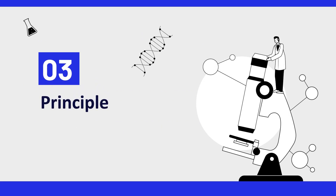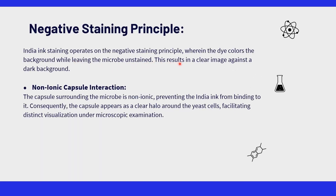Let us discuss the principle of India ink staining. The India ink staining technique is based on the negative staining principle, which states that the dye is used to stain the background while the microbe remains unstained, resulting in a clear image against a dark background. The India ink stain is composed of microscopic opaque carbon black particles floating in an aqueous solution. Because the carbon black particles do not penetrate the microbe, it remains unstained and visible under the microscope. The capsule is non-ionic, so the India ink will not bind to it. As a result, the capsule appears as a clear halo around the yeast cells.